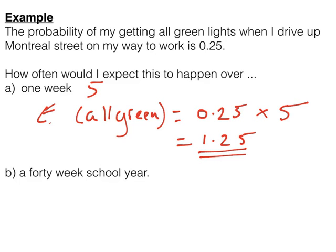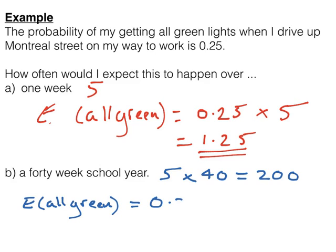Let's take this time, instead of five journeys, we're going to look at a whole 40 week school year. Now that's basically five journeys a week for 40 weeks, which is 200 journeys. So my expected value of all green over the whole year is still the same probability, 0.25. But instead of five journeys, I've now got 200. 200 times 0.25, well, 100 times 0.25 is 25, so 200 times that is 50. I expect to have 50 days in the whole year where I have green all the way up Montreal Street.